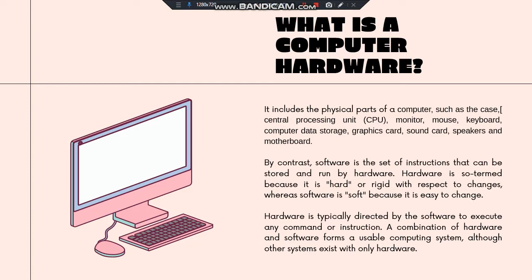Hardware is a term because it's hard or rigid with respect to changes, whereas software is soft because it is easy to change. Hardware is typically directed by the software to execute any command or instruction. A combination of hardware and software forms a usable computing system, although other systems exist with only hardware.